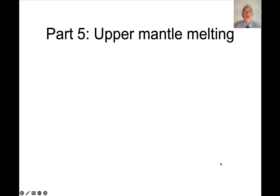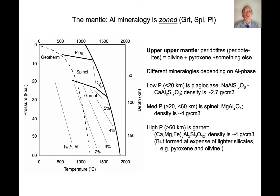Welcome back to Earth Materials. Today I want to talk about upper mantle melting. What's key to how melting occurs is related to how the mantle is zoned mineralogically with respect to aluminum-bearing phases.